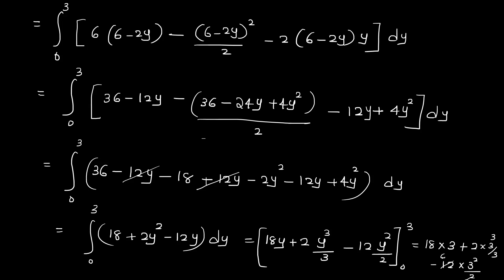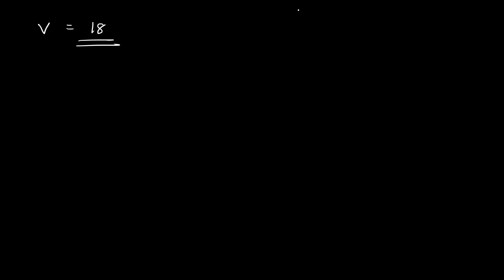Calculating: 54 plus 18 minus 54 equals 18. The volume is equal to 18.